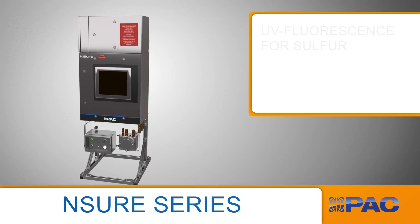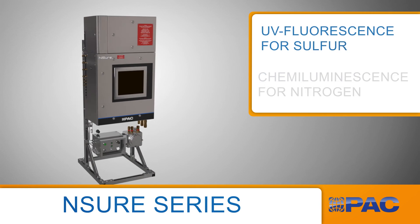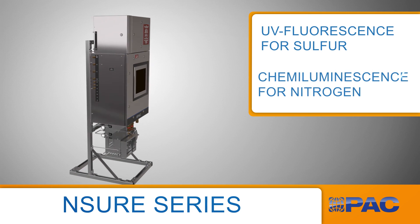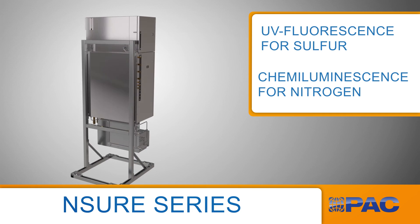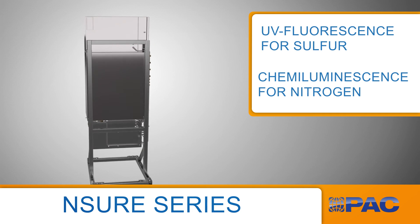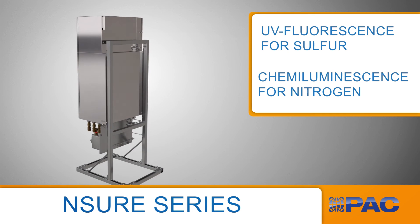Ensure uses UV fluorescence for sulfur detection and chemiluminescence for nitrogen detection. The process involves combusting a sample, exciting the molecules, and measuring the light emitted.